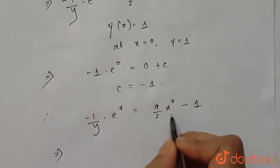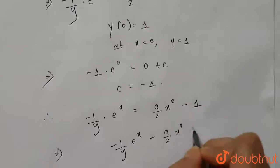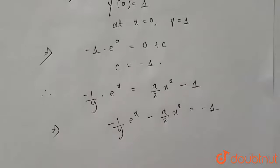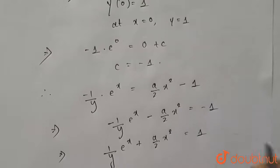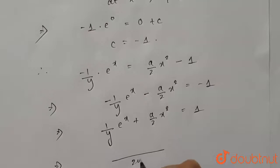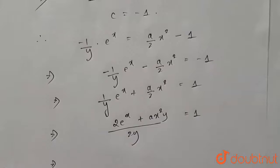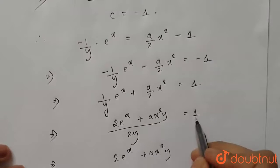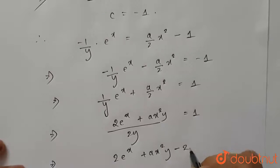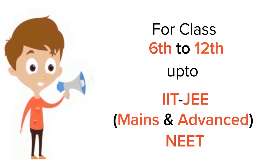Rearranging: −(1/y)·eˣ − a·x²/2 = −1. Taking minus common: (1/y)·eˣ + a·x²/2 = 1. Taking LCM over 2y: 2eˣ + ax²·y = 2y. This is the required answer. Thank you.